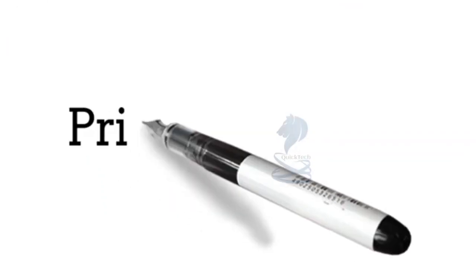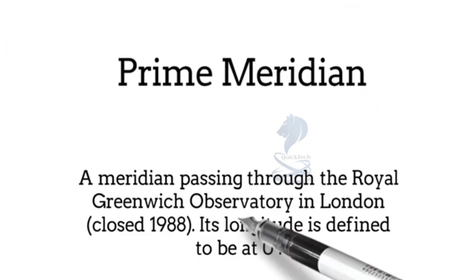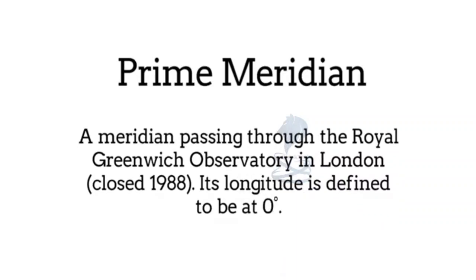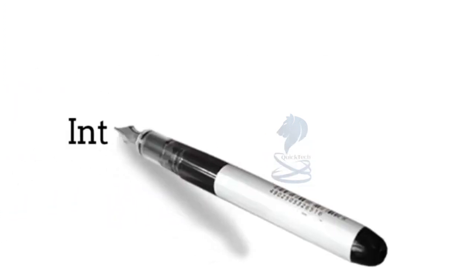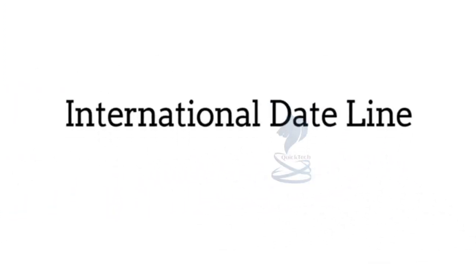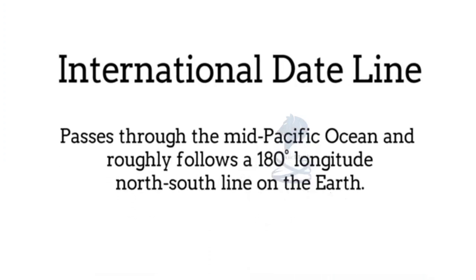Now let's discuss what the prime meridian is. A prime meridian is a meridian passing through the Royal Greenwich Observatory in London, and its longitude is defined to be zero degrees. The international date line is a line that passes through the mid-Pacific Ocean and roughly follows the 180-degree longitude north-south line on the earth.